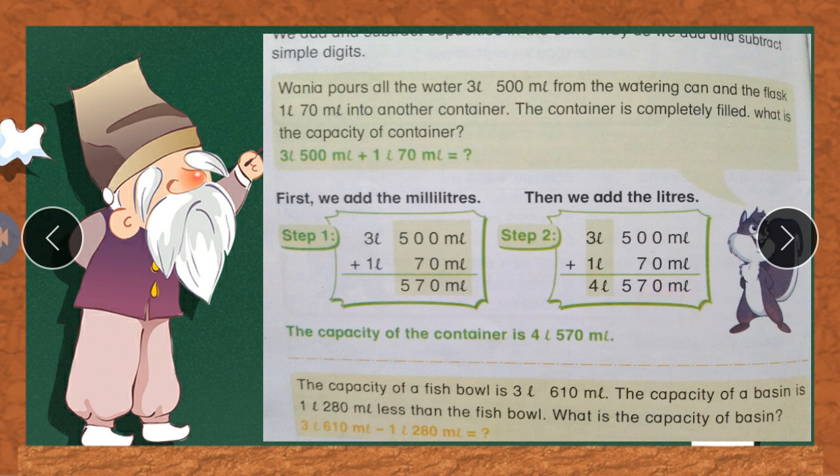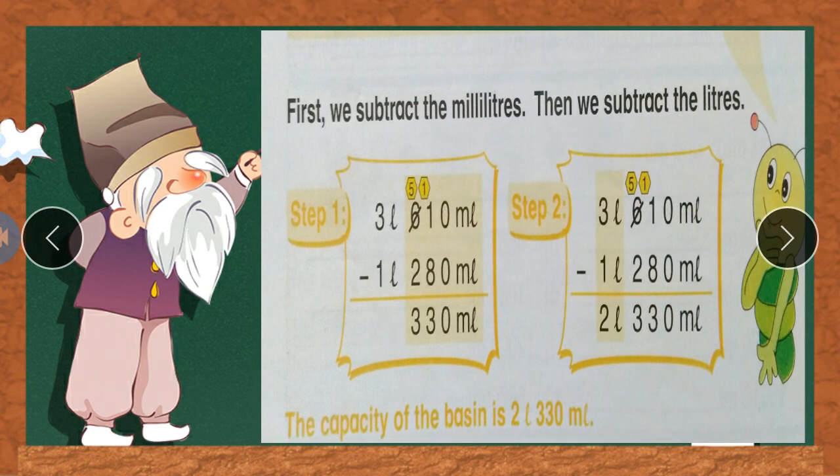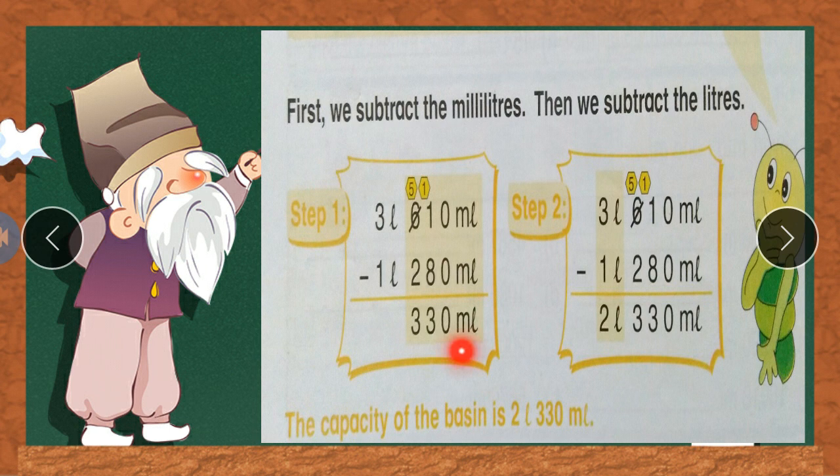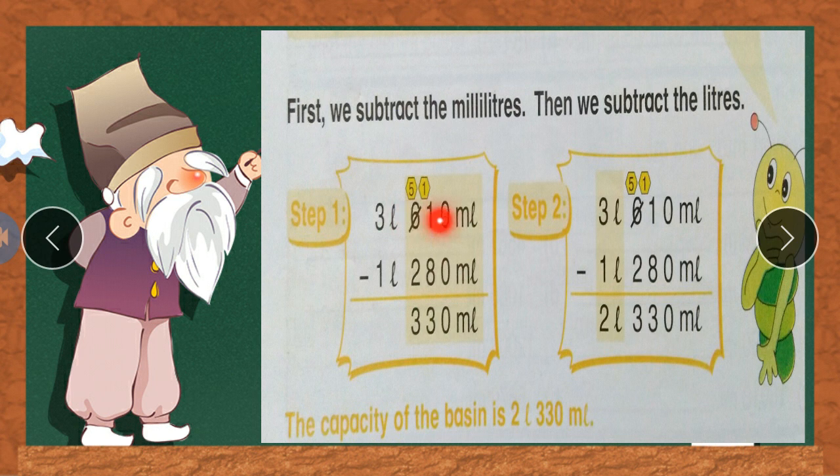And now we have subtraction. We will subtract the milliliters, so we will subtract first and then we will subtract the liters. First we will not have zero zero. One file works, eight minus, then we will do six and we will do eleven.